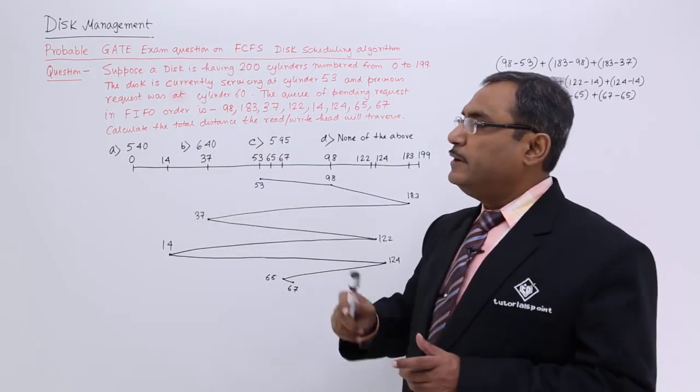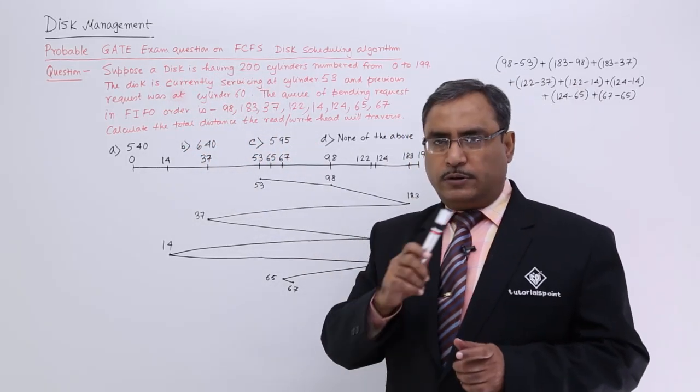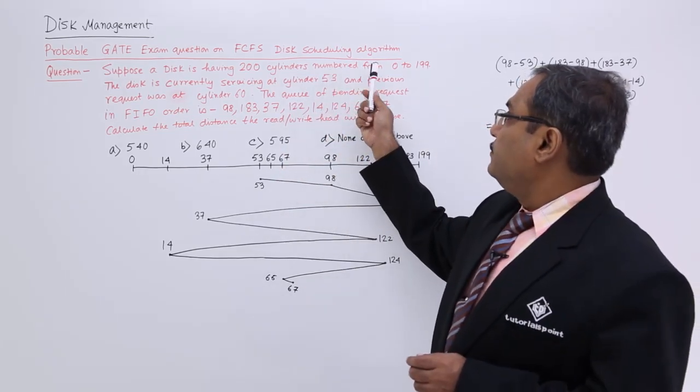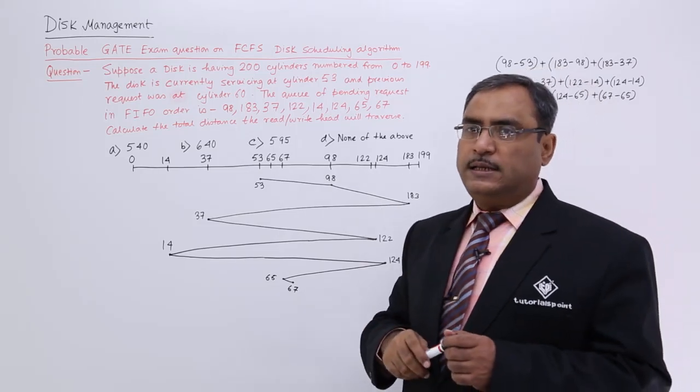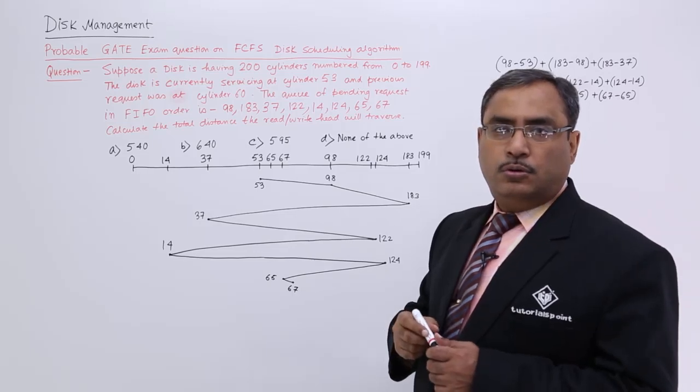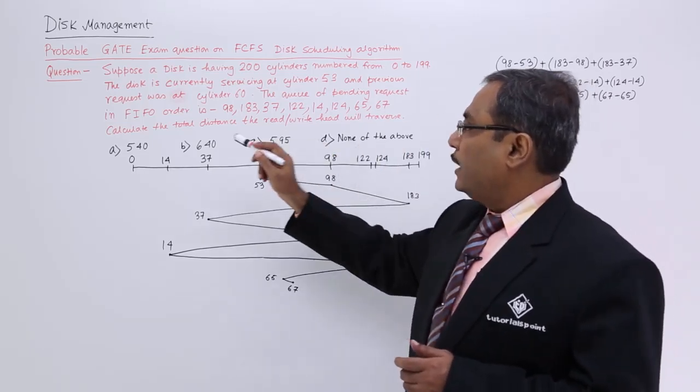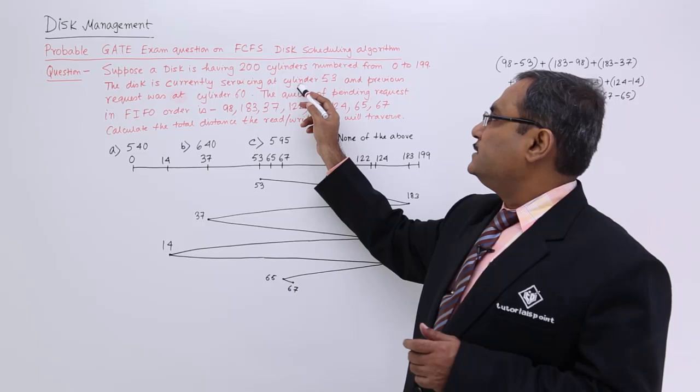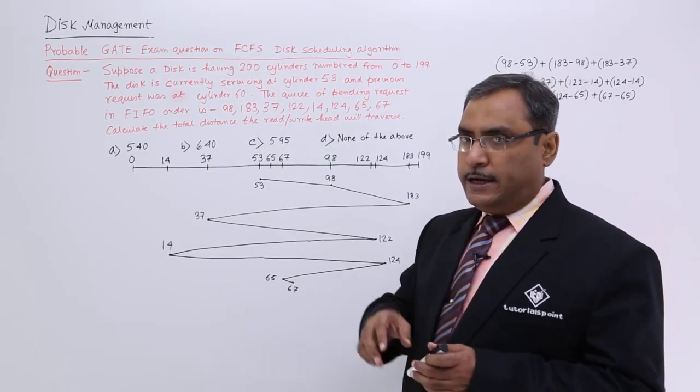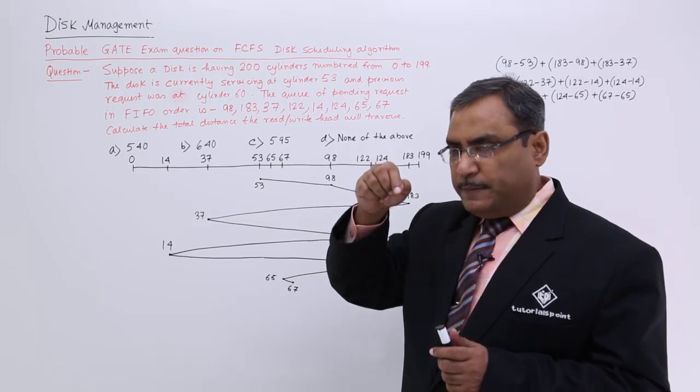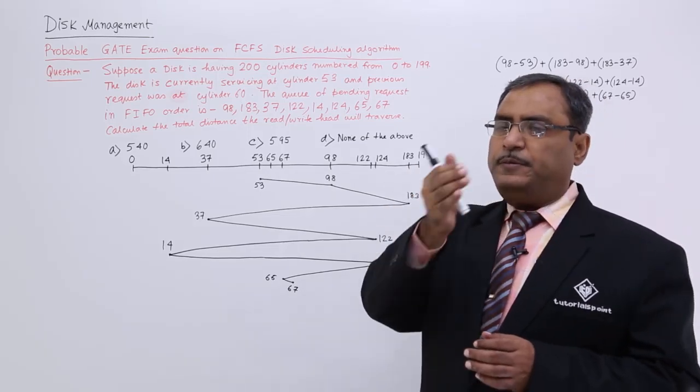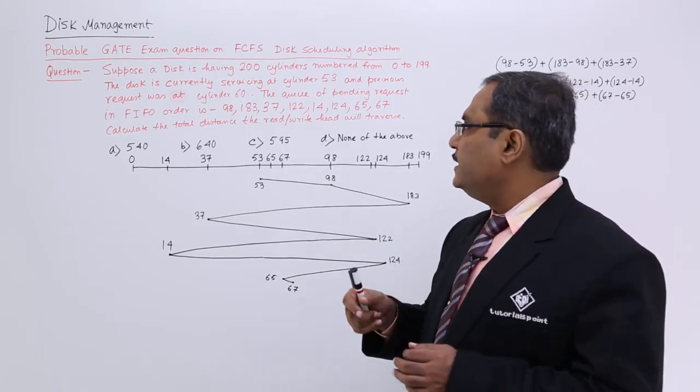Suppose the disk is having 200 cylinders. Please watch our previous videos where we have discussed what is a cylinder. Numbered ranging from 0 to 199, that means it is having 200 cylinders. The disk is currently servicing at cylinder number 53, that means my read-write head is on cylinder 53. And the previous request was at cylinder 60. So before 53, it was at 60, cylinder number 60.